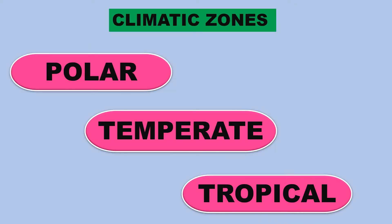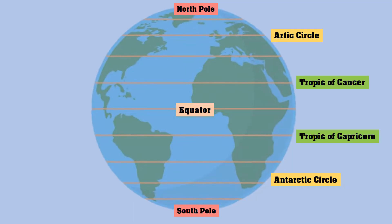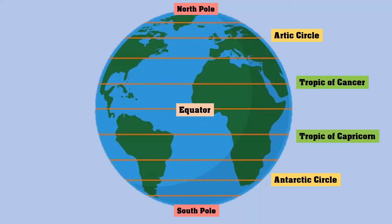Earth is divided into three main climatic zones. They are the polar zones, the temperate zones, and the tropical zone. Each climatic zone is separated by lines of latitude. Let's learn more about these zones.